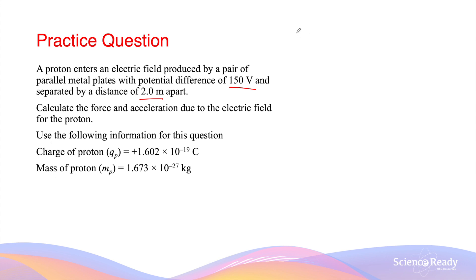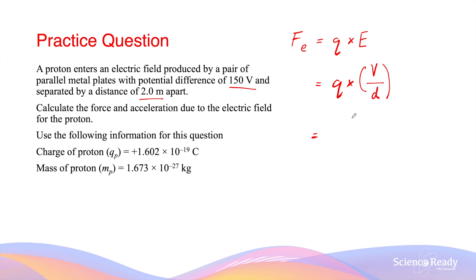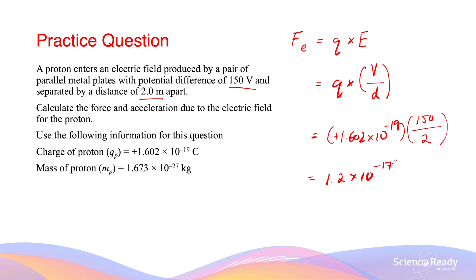As discussed previously, the magnitude of the electric force is given by the charge multiplied by the strength of the electric field, where the electric field strength is the voltage divided by the distance between the plates. The charge of a proton is positive 1.602 × 10⁻¹⁹ coulombs. The voltage is 150 volts divided by the distance of 2 meters, giving an electric force of 1.2 × 10⁻¹⁷ newtons.